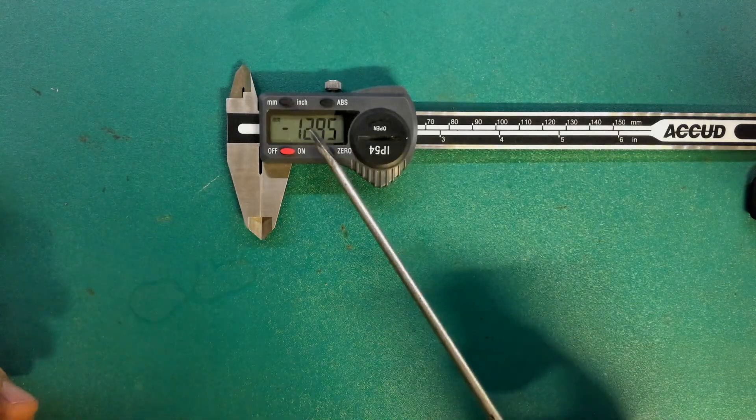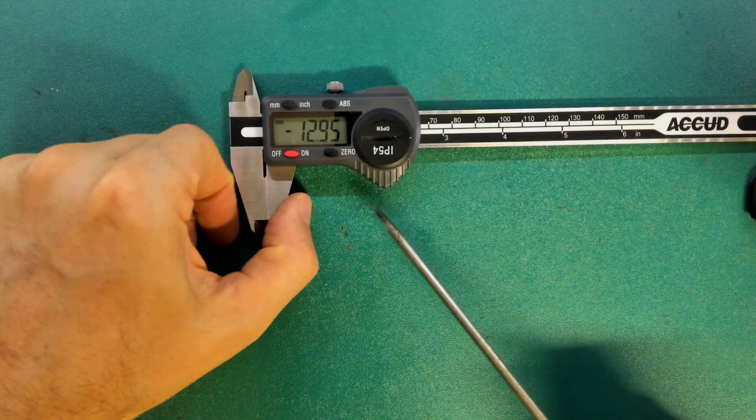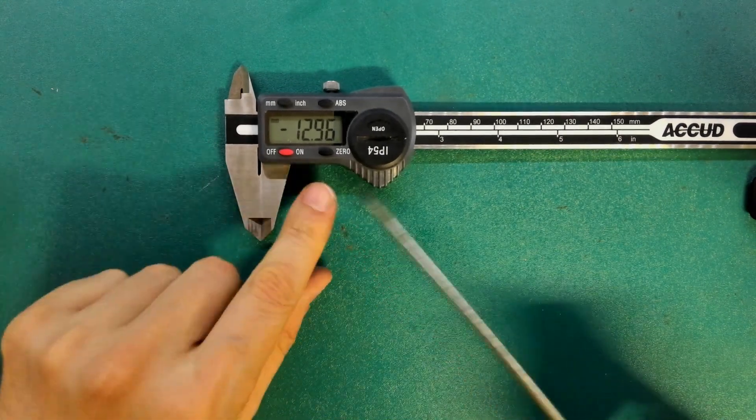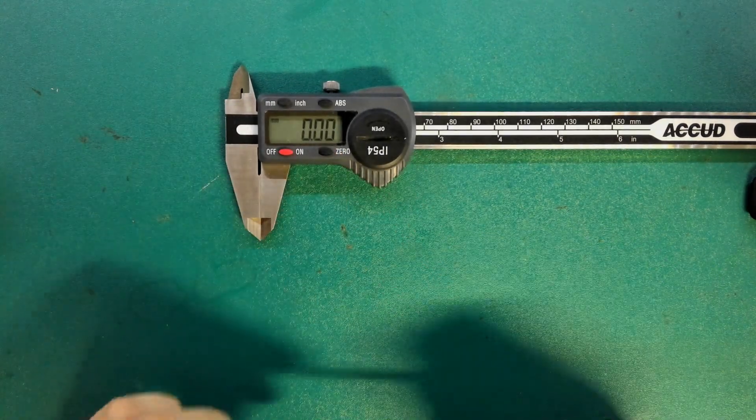Here you can see the vernier caliper has become uncalibrated, so if I slide the jaws together and zero it, it's now calibrated ready for use.